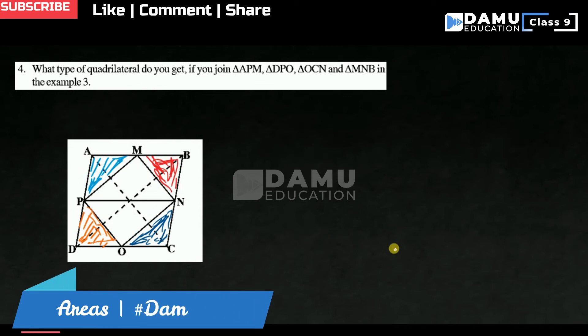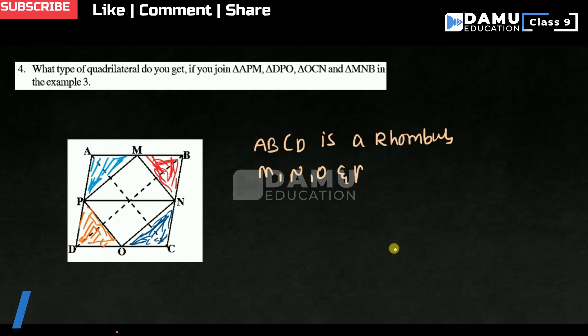Here ABCD is a rhombus. ABCD is a rhombus and M, N, O, and P are the midpoints of the sides.